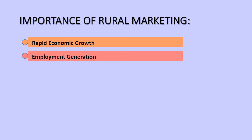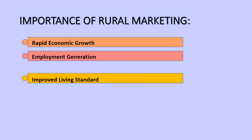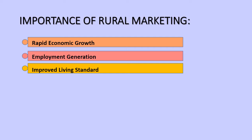Next is employment generation. Rural people are mostly involved in agriculture activities, but with the help of rural marketing, more attractive employment opportunities will be provided to them. Next is improved living standard. Due to rural marketing, rural buyers can easily get the essential goods they require at reasonable prices. Also, with progress in rural marketing, there will be development of various infrastructure facilities, which will ultimately improve the standard of living of rural people.